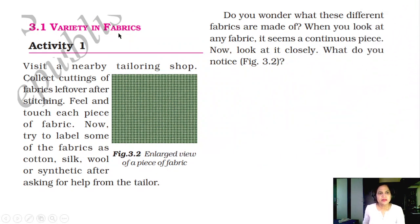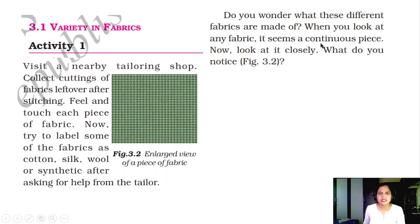Section 3.1: Variety in Fabrics. Activity 1: Visit a nearby tailoring shop. Collect cuttings of the fabrics left over after stitching — there you will get small pieces. Feel and touch each piece of fabric. Now try to label some of the fabrics as cotton, silk, wool or synthetic, after asking for help from the tailor. Do you wonder what these different fabrics are made of? When you look at any fabric, it seems a continuous piece. Now look at it closely — what do you notice?